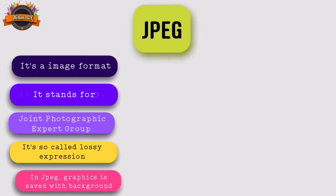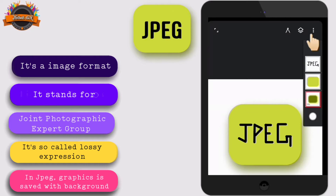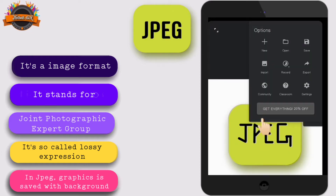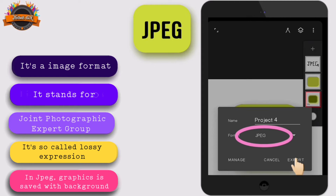In JPEG, graphics is saved with its background. This is digital artwork. If you save this work in JPEG, it will be saved with its background.